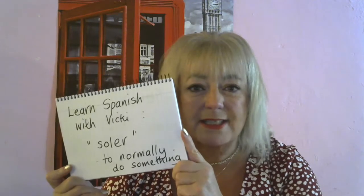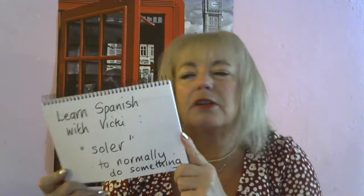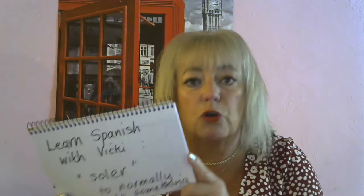Soler more or less translates to something that you normally do — something that is your custom to do, something you normally do every day, or used to do when we go into the past tense. So we're going to look at the present tense first. Normally when we're talking about what we do, we use a word like 'normally' — normalmente voy a la playa, or a menudo, often voy a la playa, or muchas veces voy a la playa. So we would conjugate the verb — in this case ir — and if we were talking about something else we normally did, we'd have to conjugate that verb as well.